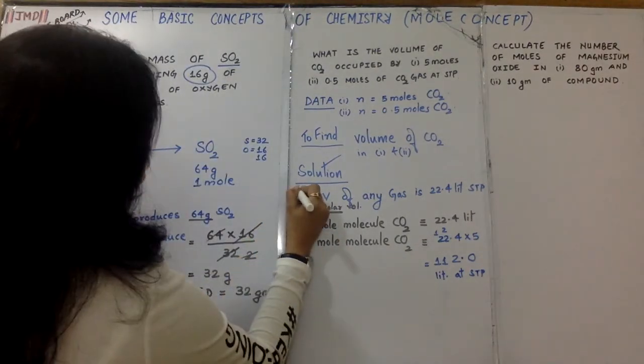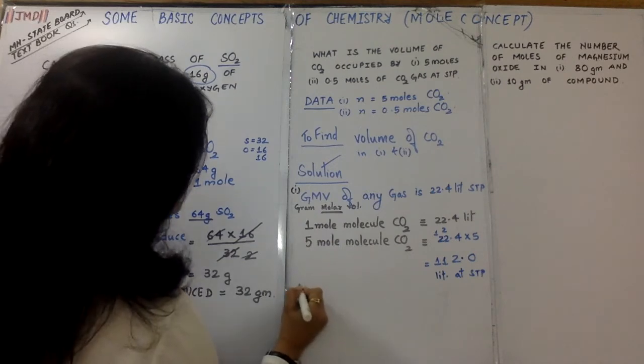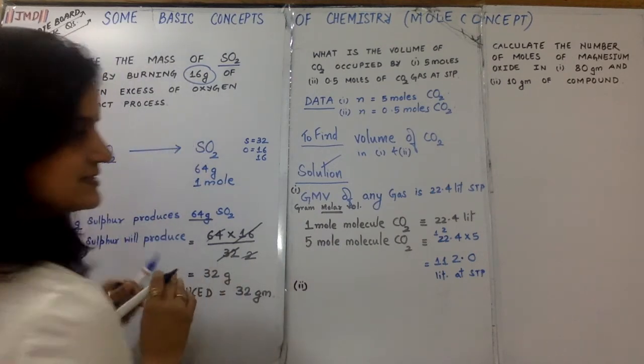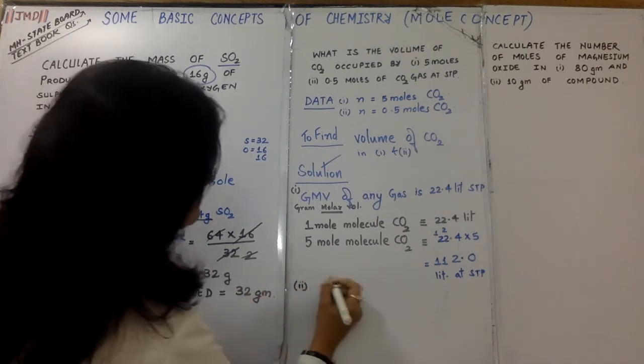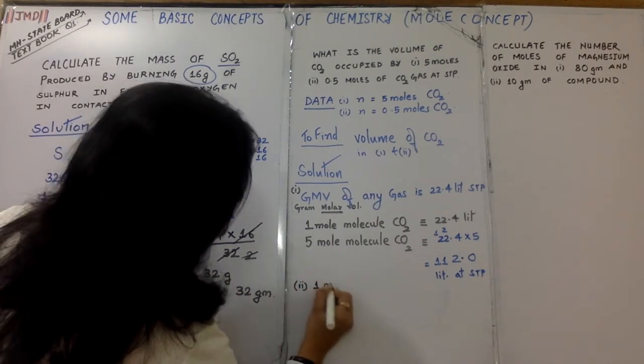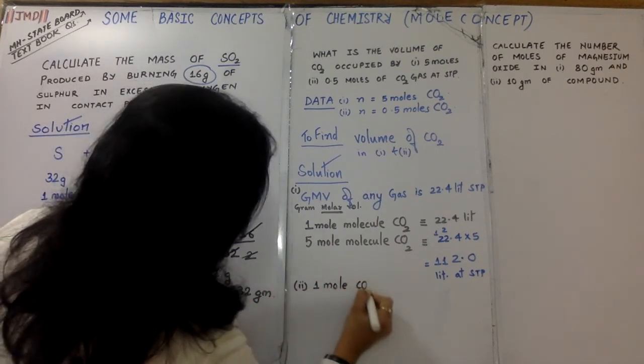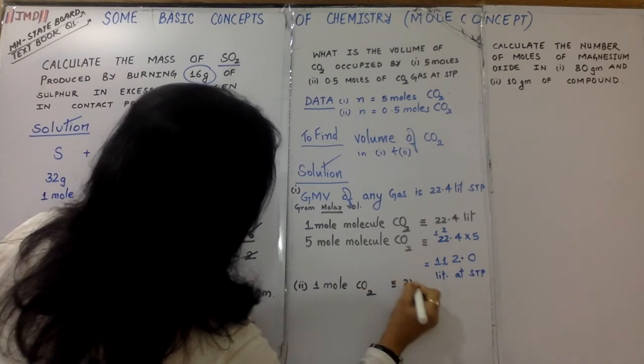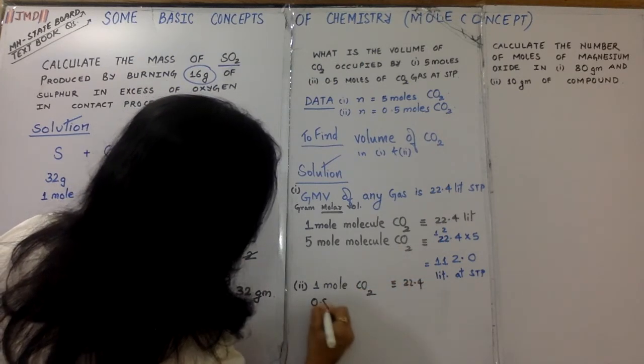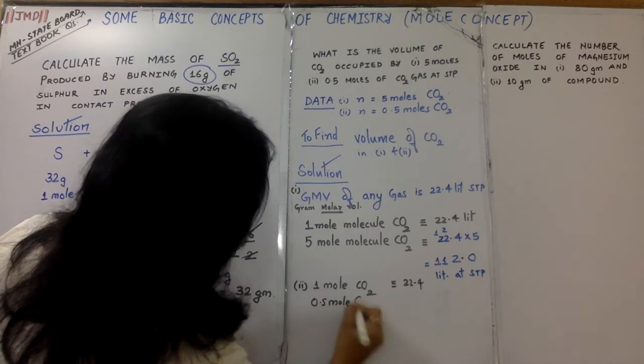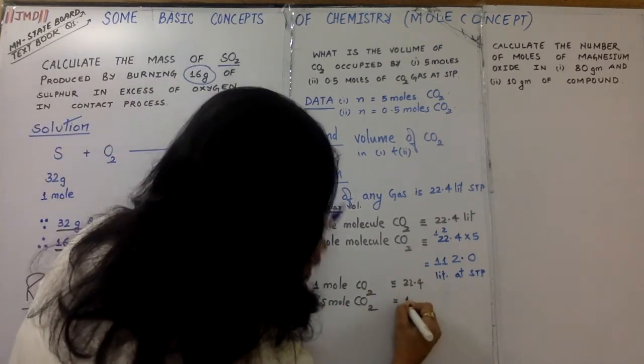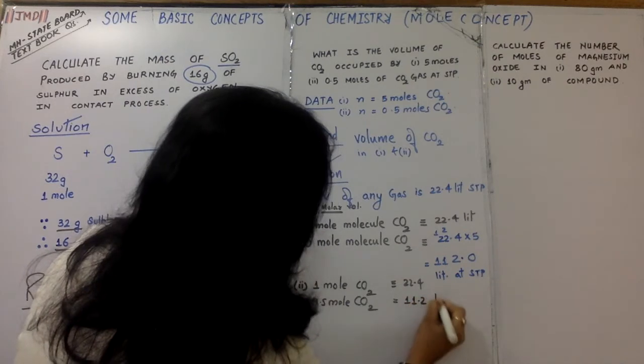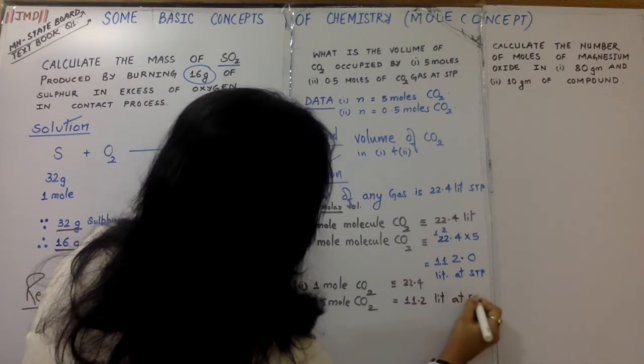Now the second one, case 2. Same way: 1 mole CO2 is 22.4 liters. So 0.5 moles CO2, we just have to multiply, so 11.2 liters at STP.